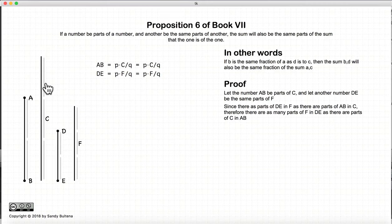Now let me just demonstrate here. Here we have the parts of c, and here we have the parts of f, and they are the same in the sense that these parts are one-third, and these parts are one-third. And now ab are the same number of parts. So in this case, there's two of the parts of c, and de has two of the parts of f.